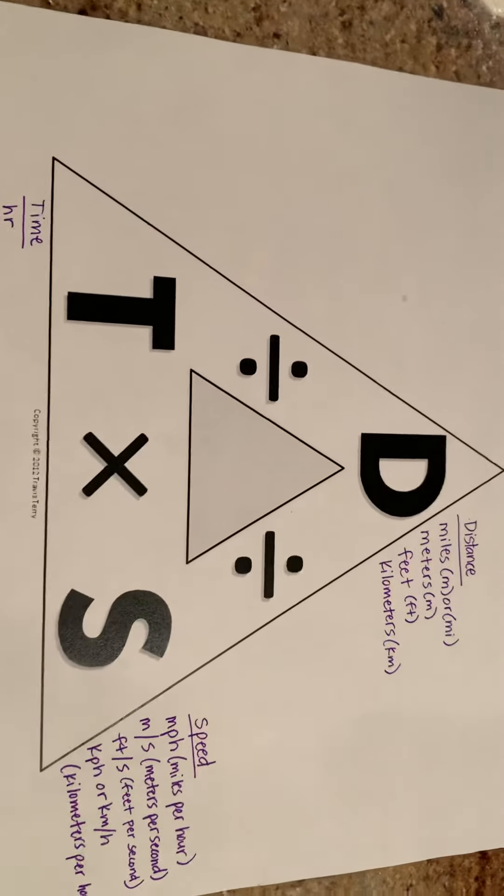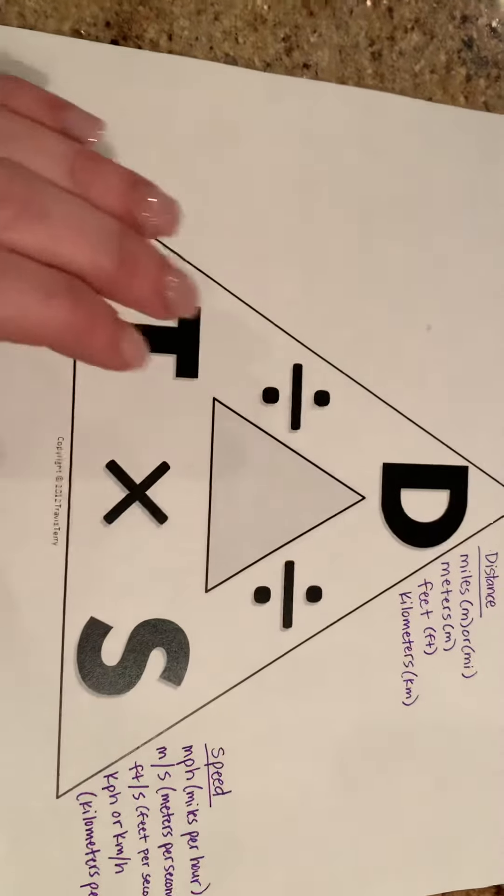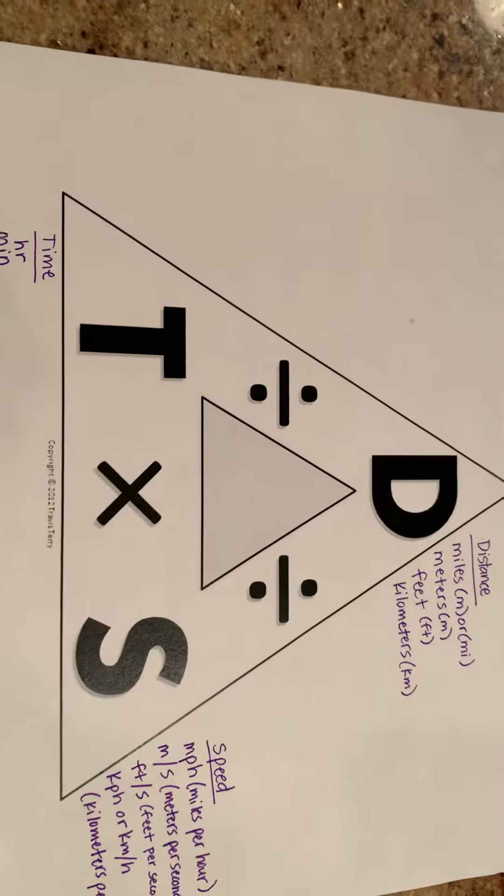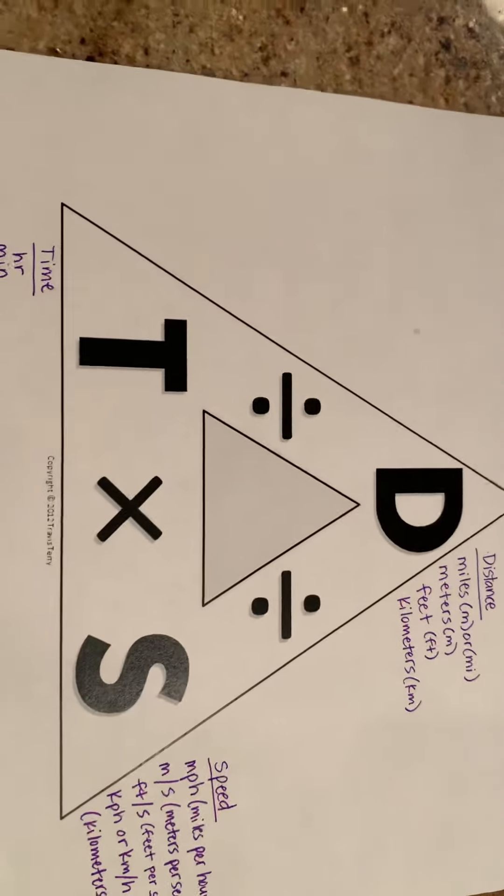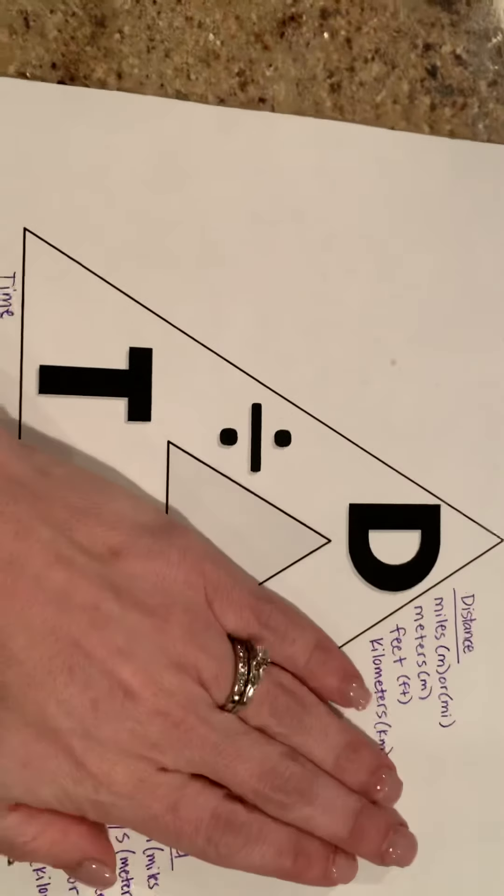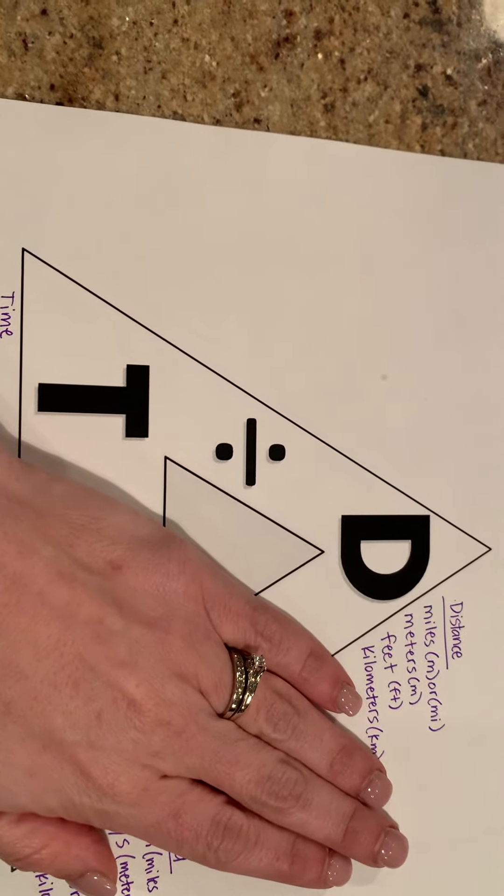Now once we determine in a problem whether we're looking for speed, distance, or time, this is how you use the triangle to determine what the equation should look like. So let's say it asks us to calculate speed. We're going to cover up speed and that tells us that our problem should be our distance divided by our time.